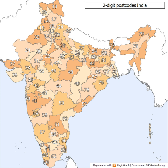The PIN code system was introduced on 15 August 1972 by Sriram Bhikaji Vilankar, an additional secretary in the Union Ministry of Communications. The system was introduced to simplify the manual sorting and delivery of mail by eliminating confusion over incorrect addresses, similar place names, and different languages used by the public.